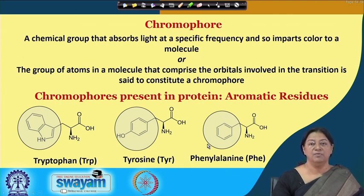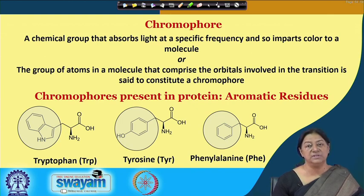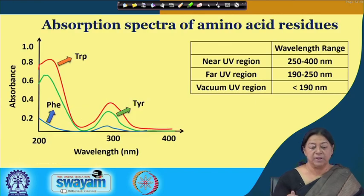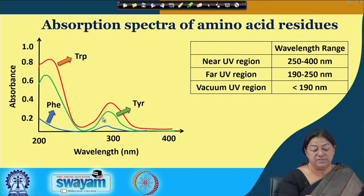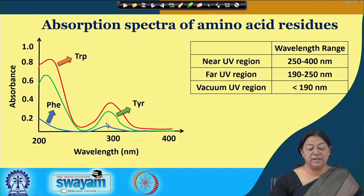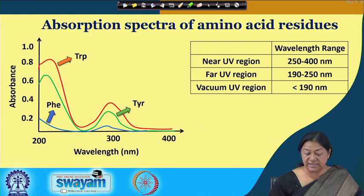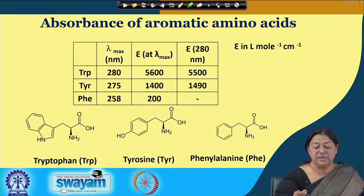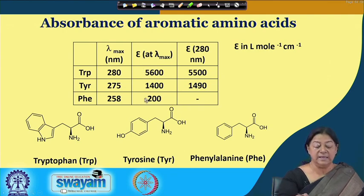We look at the UV region to understand whether a protein is present in our solution. The absorption spectra of amino acid residues comprise these regions, and we are most interested in whether we have a peak around the 280 nanometer region. This 280 nanometer region tells us the presence of tryptophan, tyrosine, and phenylalanine. When we look at specific molar extinction coefficients, tryptophan has the highest value, indicating its presence gives a high absorbance to the molecule.